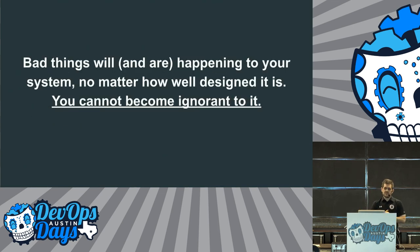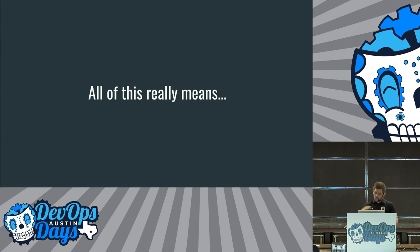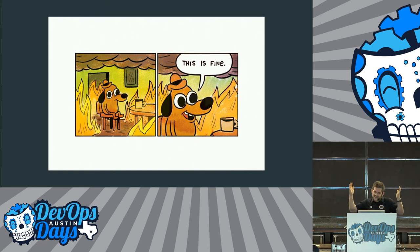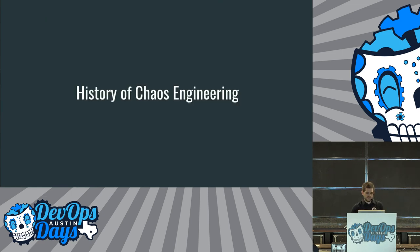Here's a more simple version: bad things will and are going to happen to your system right now. No matter how well designed it is, you cannot become ignorant to it. Be aware — there's failure right now. All of that can really just mean the 'this is fine' dog meme. Chaos engineering works to avoid that situation. We don't want to be the dog saying 'this is fine.' We want to be like, 'we knew about the fire — there is no fire. We saw it and we can control it.'